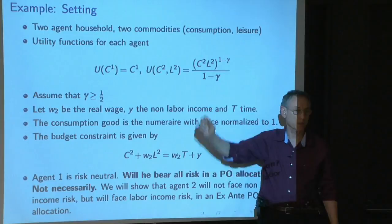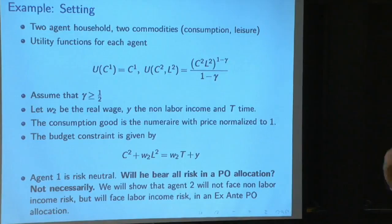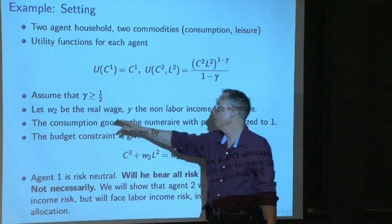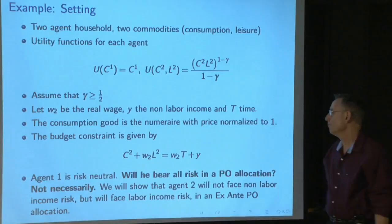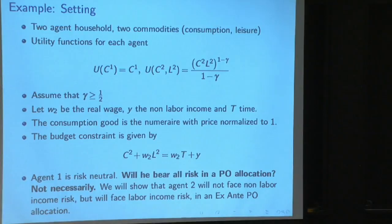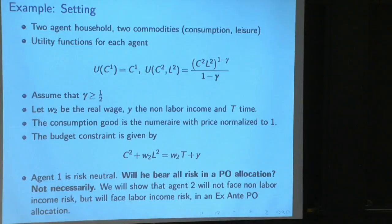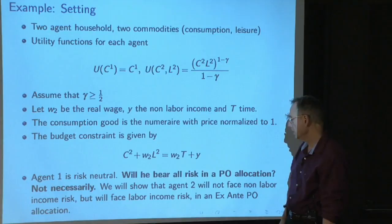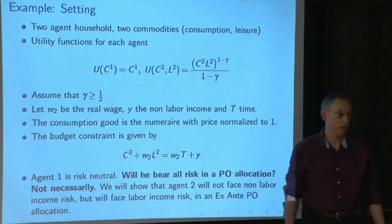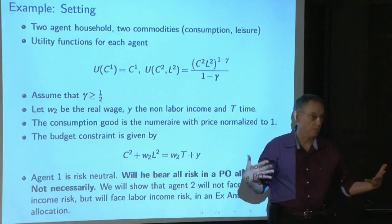Why is this an obvious example? Because the risk-neutral guy should absorb all the risk — and would in every setup we've seen so far — taking it away from the risk-averse guy with a strictly concave utility function. However, this guy cares about leisure and consumption, not just consumption. It's a typical Cobb-Douglas specification with some curvature. You get a wage W2. When we generalize, we'll allow different wage processes for different people. But for now, there's only one guy supplying labor. T is the time endowment; consumption is the numeraire; wages are real. There's a budget constraint for this two-person problem, like a small open economy in partial equilibrium facing outside wages.